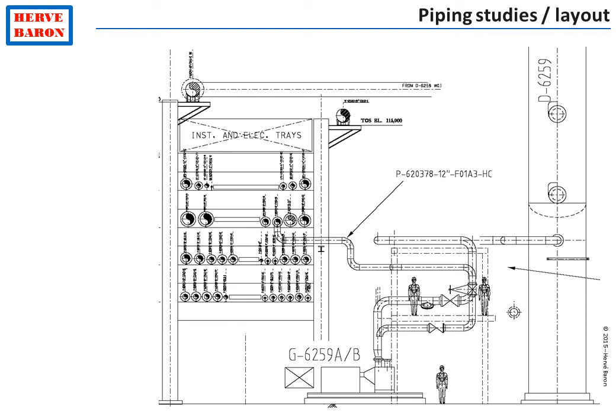Once these piping studies are completed, the piping layout drawing — such as the one shown here — is issued. This is an internal drawing issued by the piping designer to other disciplines, including the piping support engineer for the calculation of the line. These drawings are also the starting point for the detailed modeling of the line in the 3D model.